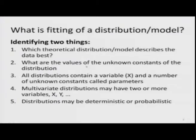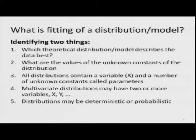These two things are basically part of fitting a distribution. All distributions contain a variable and a number of unknown constants — they are parameters — and I am referring to estimation of them. Distributions may have one parameter: the Poisson distribution has only one parameter, lambda. The normal distribution has two parameters, mu and sigma, and there are distributions which have three parameters.